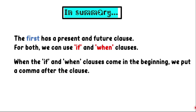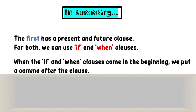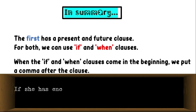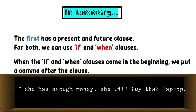When the if or when clause comes at the beginning, we put a comma after the clause. For example: if she has enough money, she will buy that laptop. We have the comma between the two clauses, with the if clause at the beginning. It can also be the when clause as well.